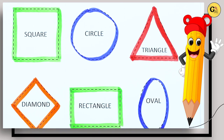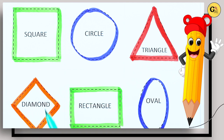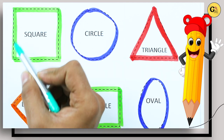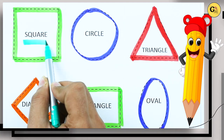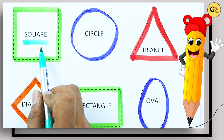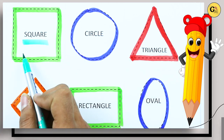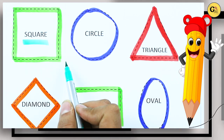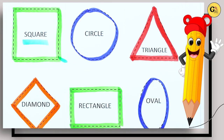Hello friends, today we learn shapes with colors. Which shape is this? Tell me, square. S-Q-U-A-R-E. It's a square with green color.